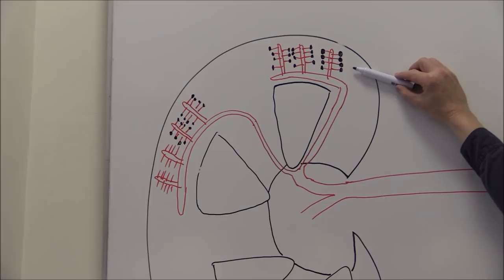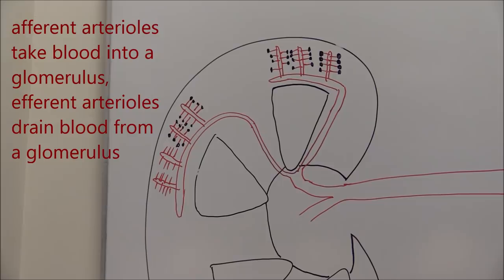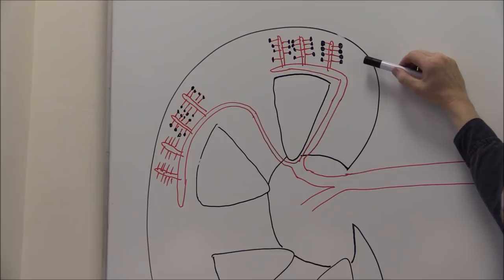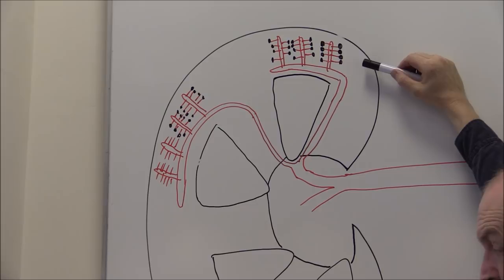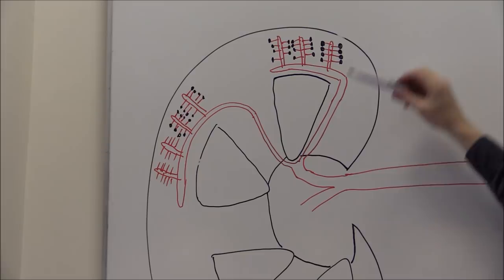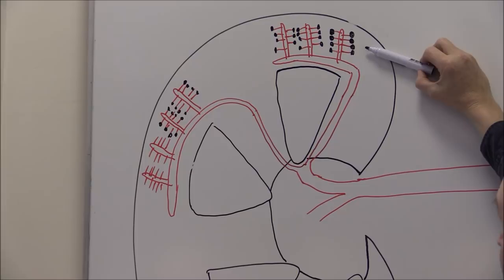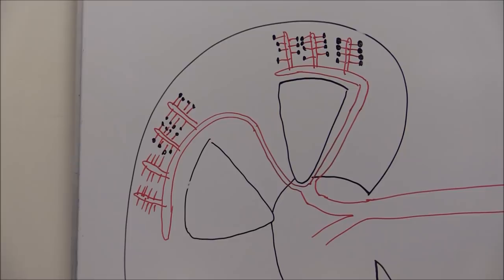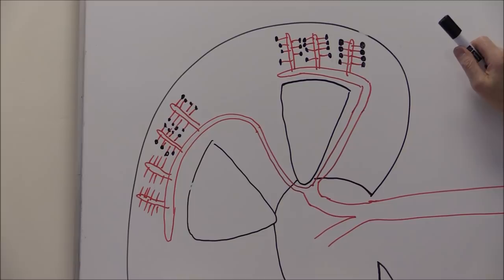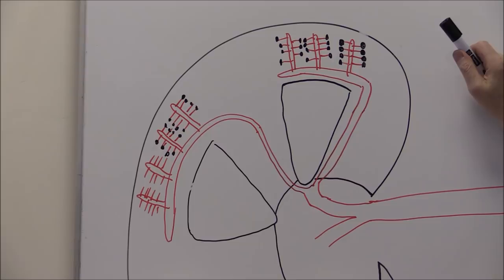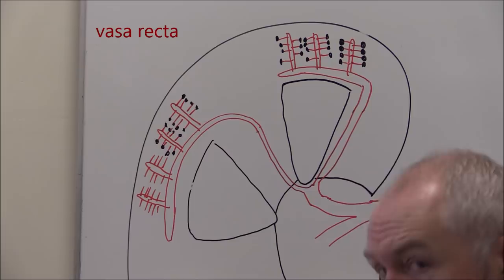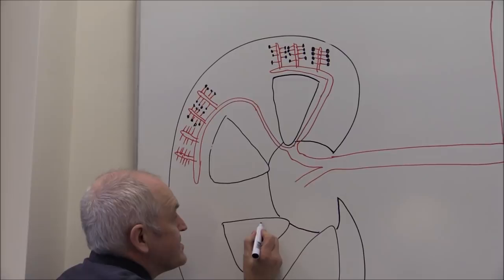The afferent arterioles pass into the glomeruli of the kidney. From the glomerulus, the blood drains into efferent arterioles. The efferent arterioles themselves break up into smaller capillaries. In the cortex, these capillaries surround the upper part of the renal tubules — these are the peritubular capillaries. In the medulla, the efferent arterioles branch into the vasa recta blood supply and drainage system.